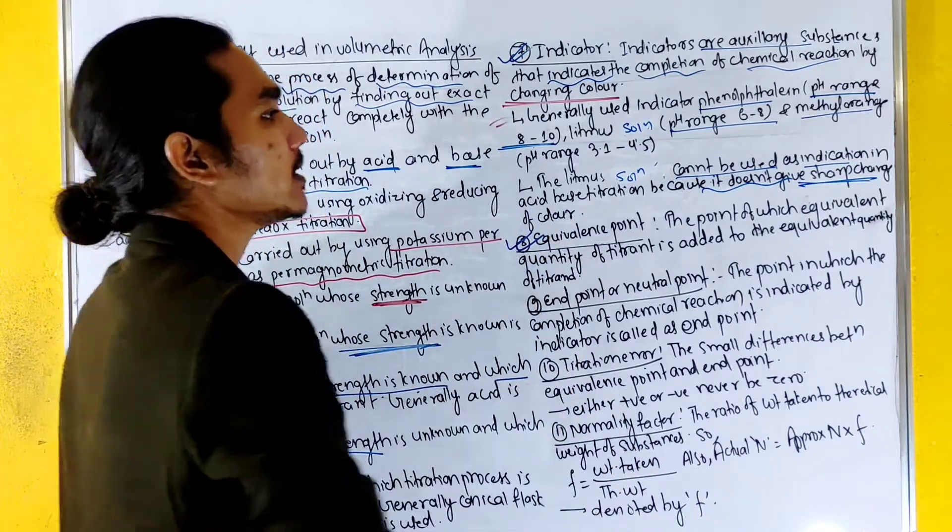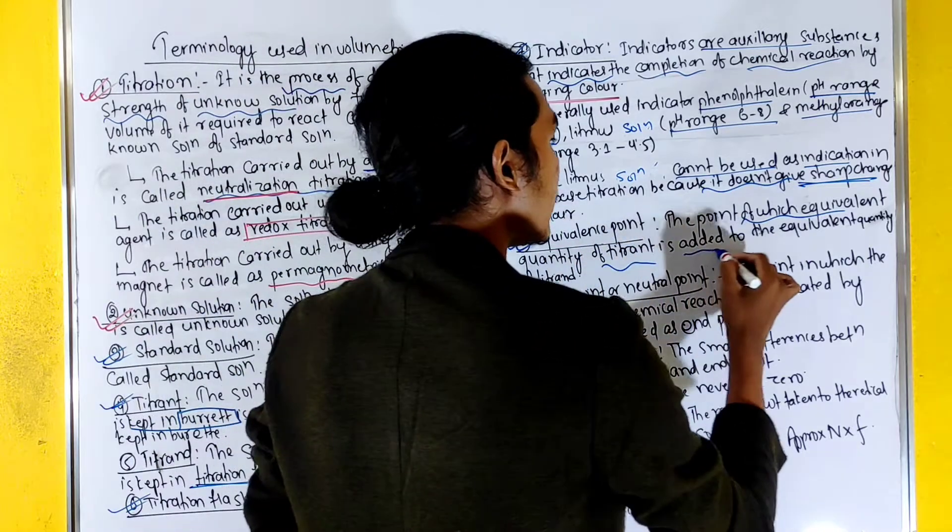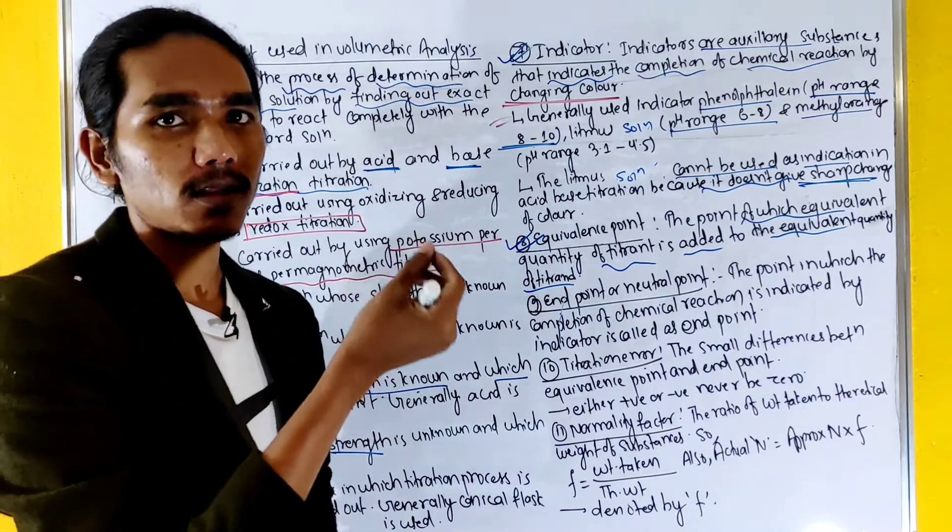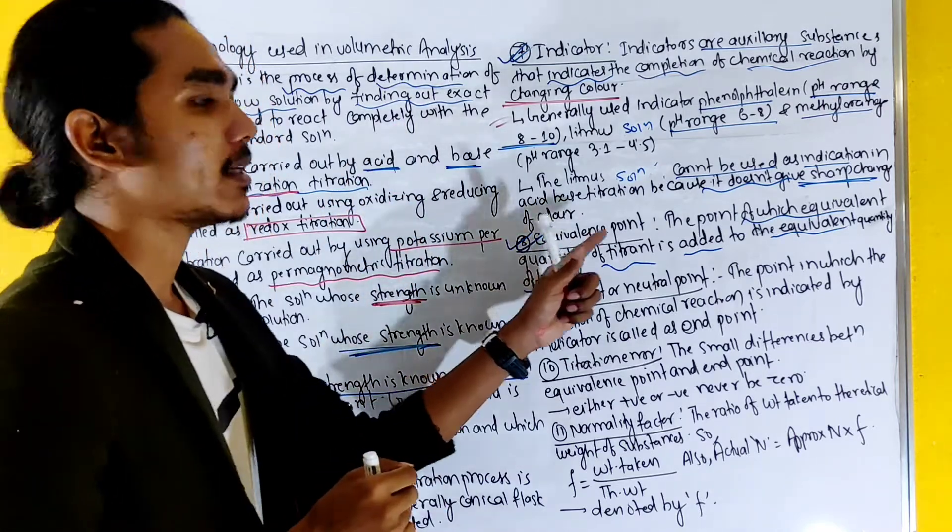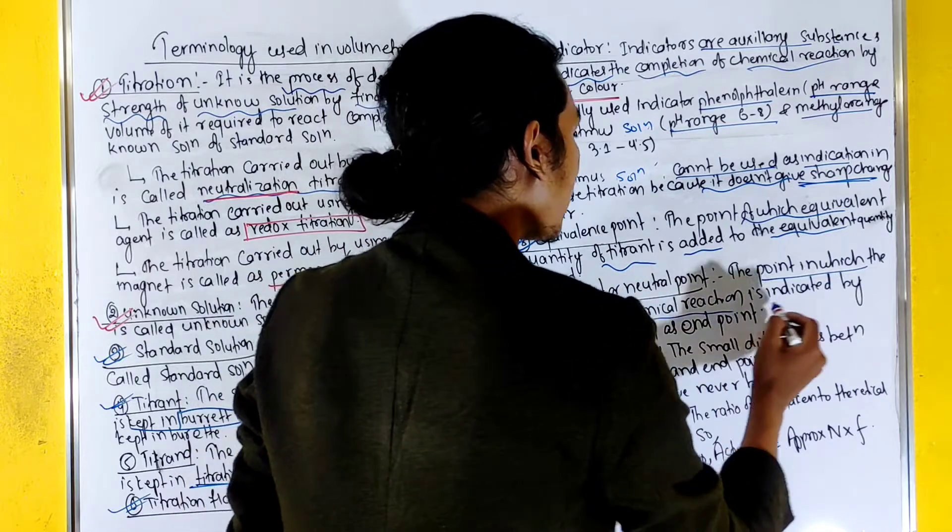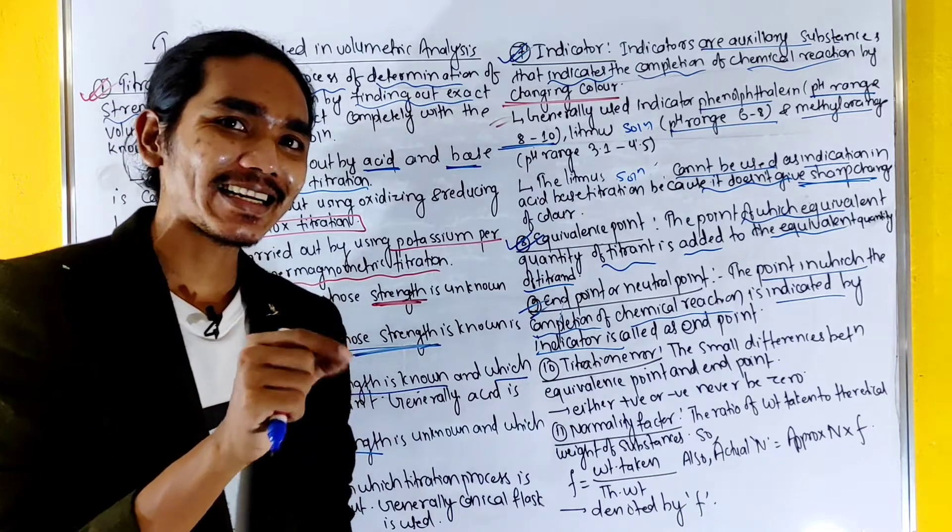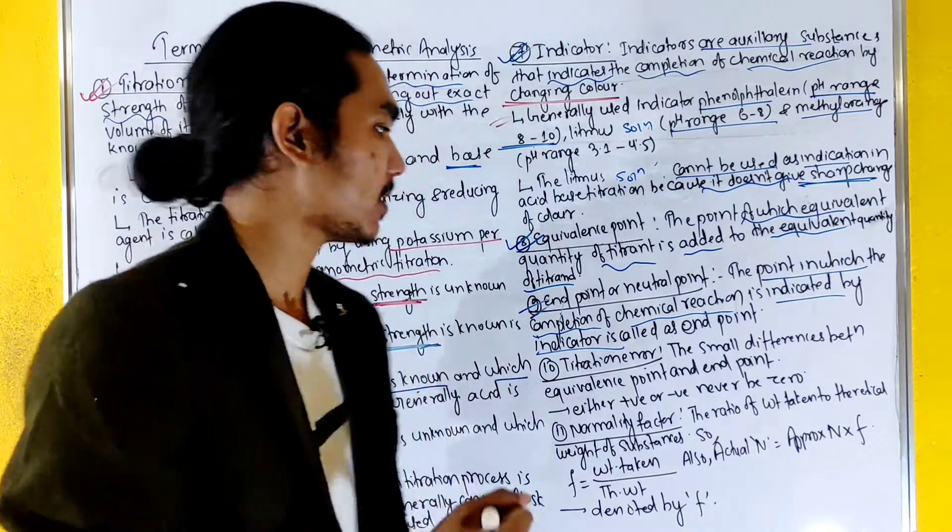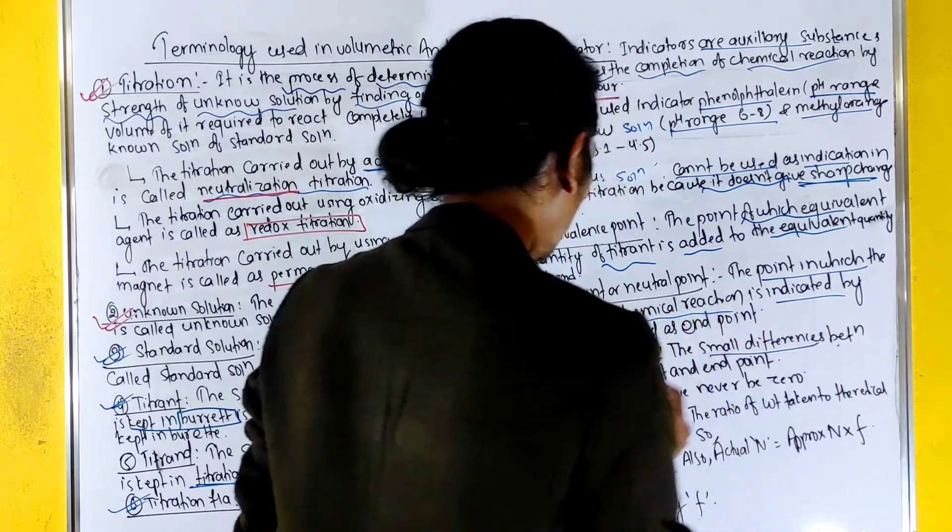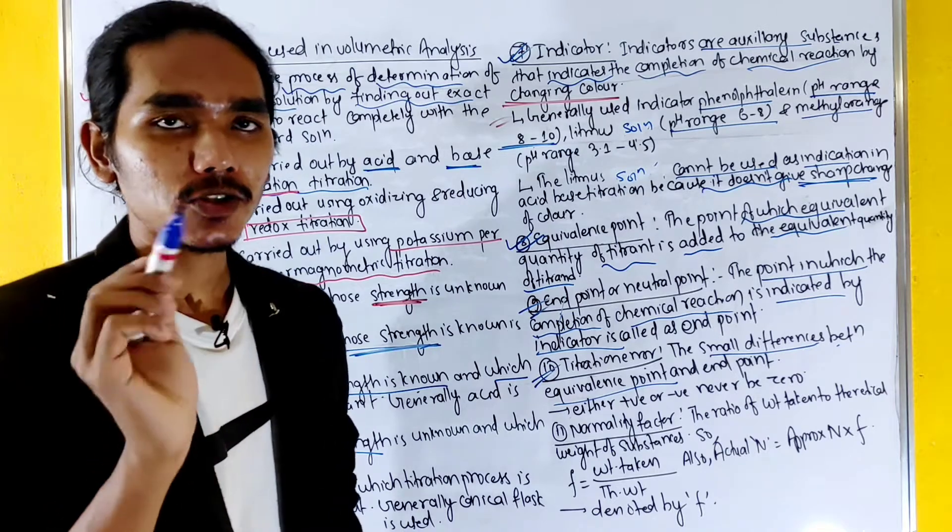The point in which the equivalent quantity of titrant is added is the equivalence point. The point in which the completion of chemical reaction is indicated by the indicators is the endpoint. Small difference between equivalence point and endpoint is called titration error.